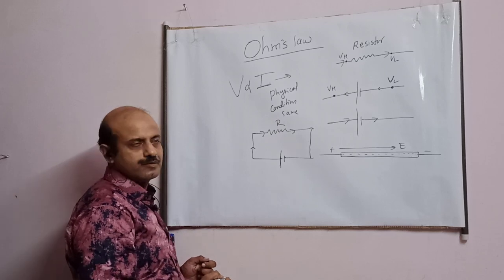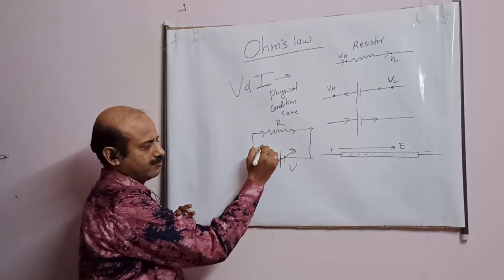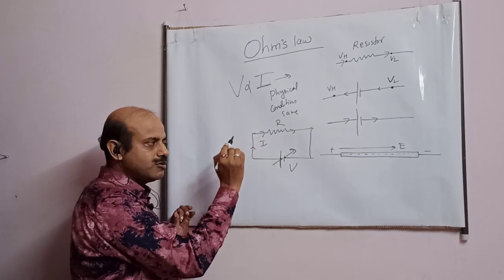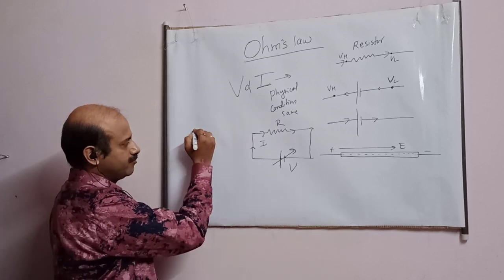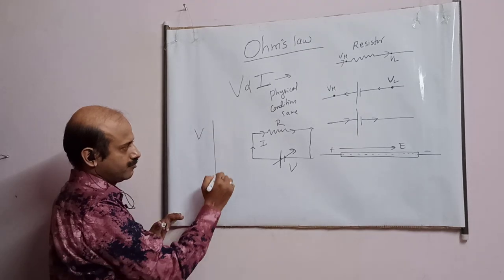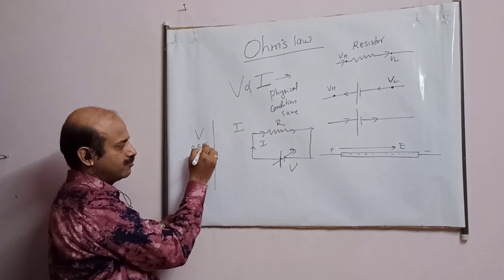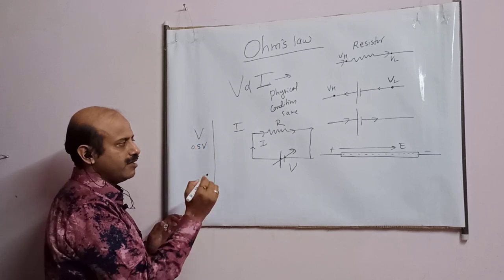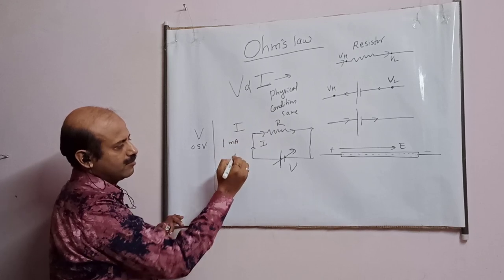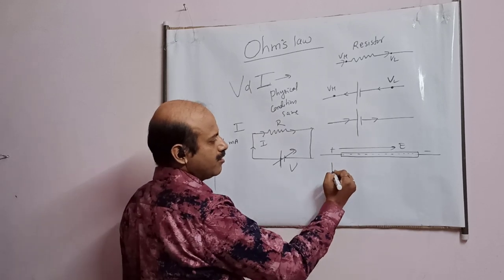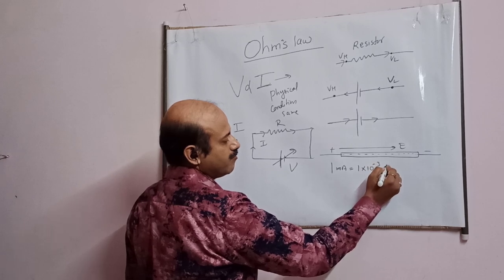So what Ohm's law says is: suppose I change this voltage, the current will also change. Suppose I have applied 0.5 volt and say the current is 1 milliampere. 1 milliampere means 1 × 10⁻³ ampere.